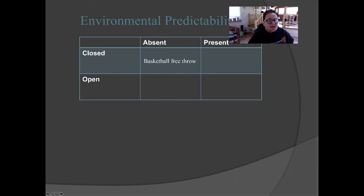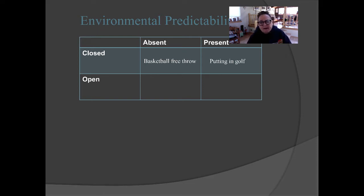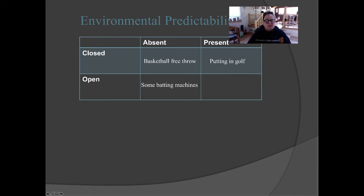In other words, is there intertrial variability or not? The basketball free throw on a regulation court is a closed environment and the relevant changes in the environment are absent. Whereas in putting in golf, every time I go to putt, I might be at a different place on the green, and therefore intertrial variability is present because I have to change the movement pattern each time.